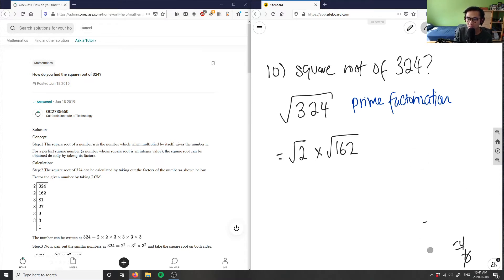If you have a calculator, just punch this in and you get 162. Then 162, I'm going to break this even further. I'm going to take out another root 2 here because I know it's an even number. So I'm going to have root of 81.